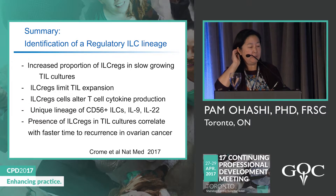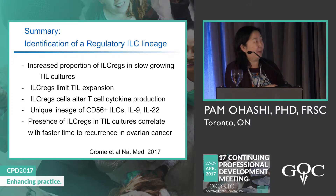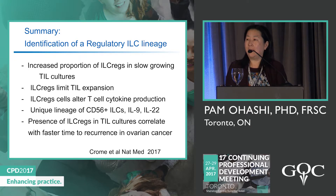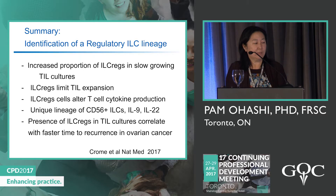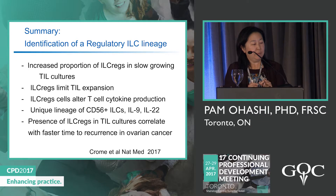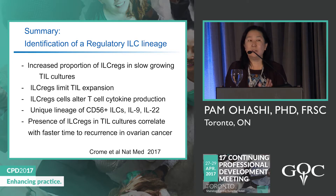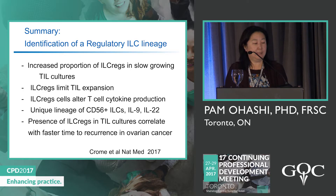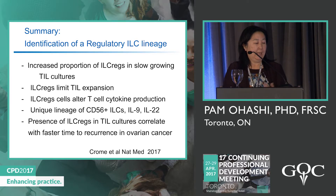We recently published this study in Nature Medicine in March. Using fresh surgical specimens to grow TILs, we identified a unique population of regulatory cells we call innate lymphoid regulatory cells (ILC-regs). These cells limited T-cell expansion — both helper and cytotoxic — and altered cytokine production by the T cells. They appear to be a unique lineage expressing CD56 and a unique combination of cytokines, IL-9 and IL-22. The presence of these cells correlated with time to recurrence in ovarian cancer.